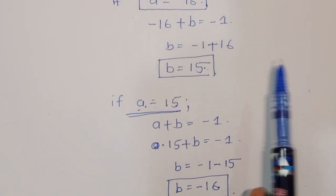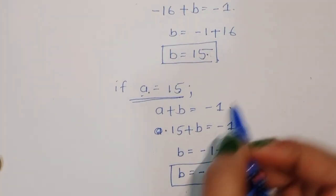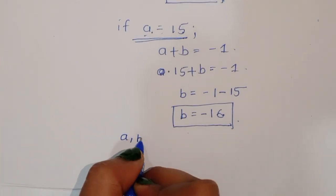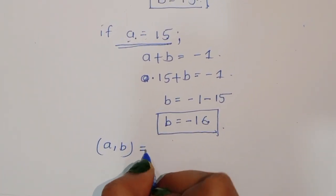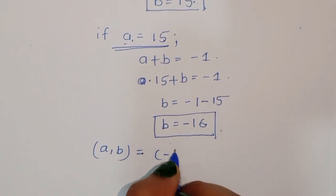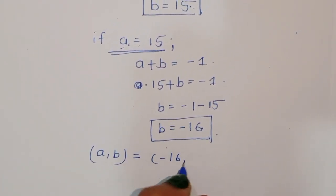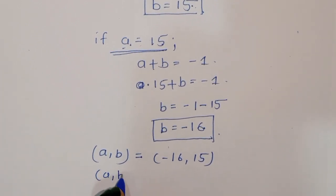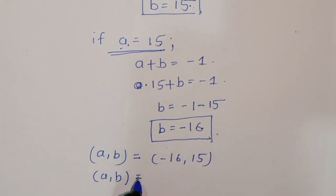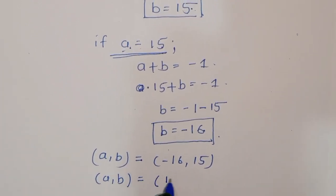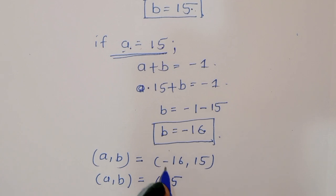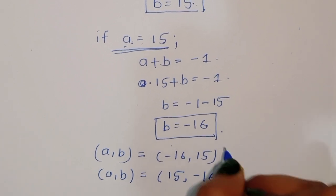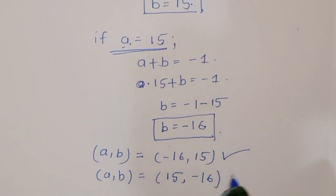So we got two solutions: the first is (A, B) equals (minus 16, 15), and the second is (A, B) equals (15, minus 16). These are the true solutions. Thank you.